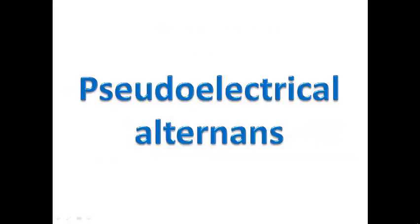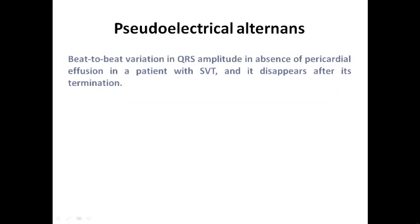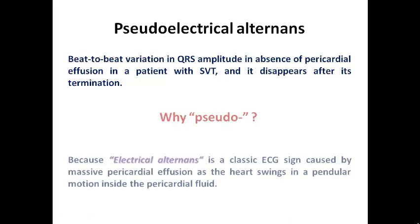That was a quick summary for ST depression. Now we discuss a new feature commonly seen on ECG during SVT: pseudo-electrical alternance. This means there is beat-to-beat variation in QRS amplitudes in the absence of pericardial effusion in patients with SVT, and it disappears after termination.